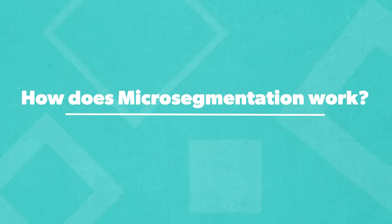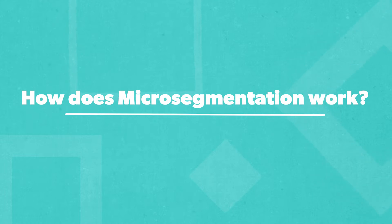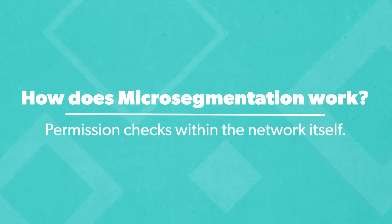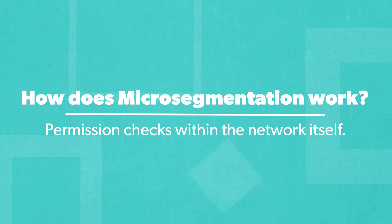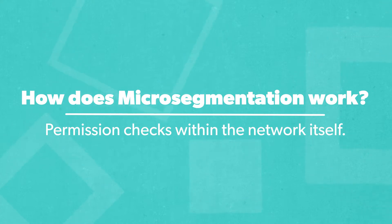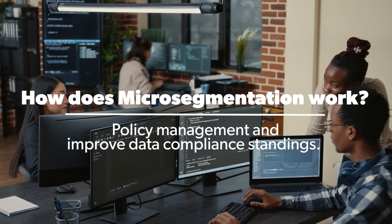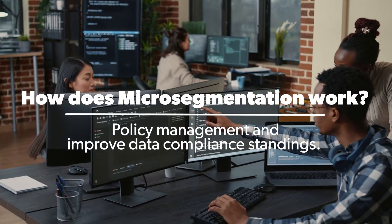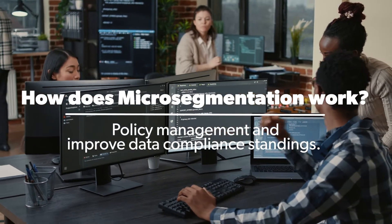So, how does micro-segmentation work? Basically, it entails creating permission checks within the network itself. Not only does this reduce attack surfaces, thus limiting network mobility, it can also enhance policy management and improve data compliance standings.